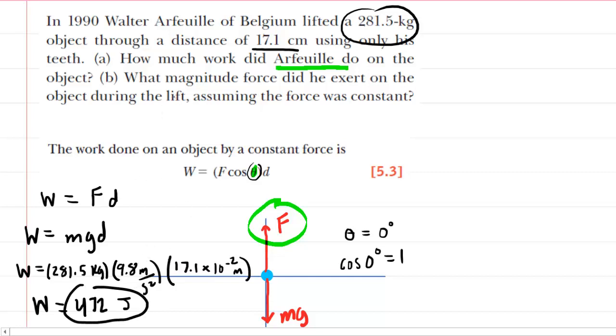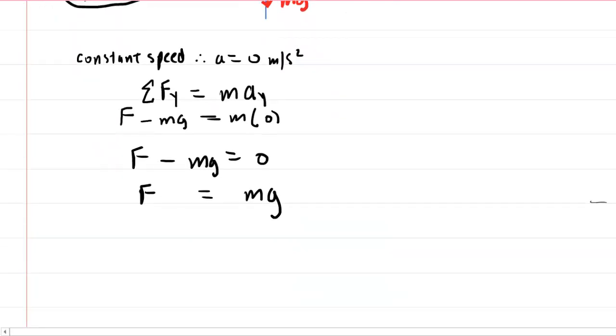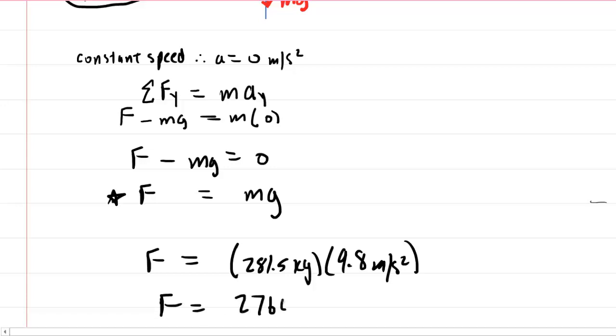Luckily, part B is going to be easy. They say, what magnitude force did he, the individual, exert? We already computed that or at least determined the expression for it. We said that the force that the individual is exerting was just mg. So all we have to do is take the 281.5 kilograms and multiply that by the gravitational constant. That's going to give us the answer to part B. And when we do that, we get about 2760 newtons. So that would be the correct answer to part B.